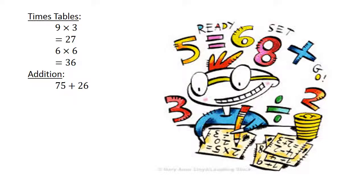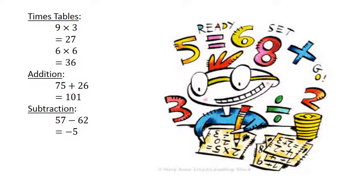Addition: 75 plus 26 equals 101. Subtraction: 57 minus 62 equals negative 5.